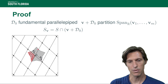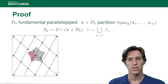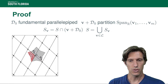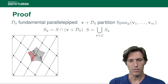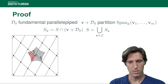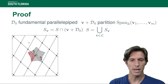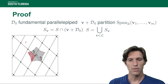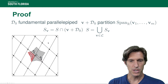So we have a partition of the span of v1 through vm by sets of the form v plus the fundamental parallelepiped D0, where v are lattice points. Now let's put our set S back in the picture. We define S_v, where v is a lattice point, as S intersected with v plus D0. For example, this is S intersected with a particular fundamental domain. S is a disjoint union of the S_v's — we have all of S partitioned into these pieces, and the intersection with other translates v plus D0 will be empty.